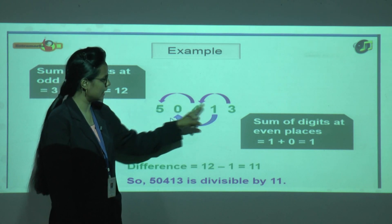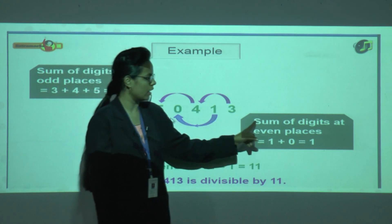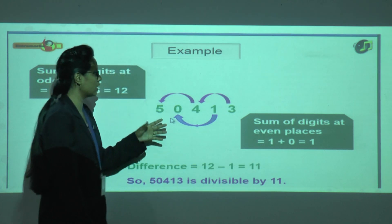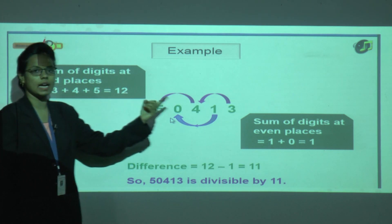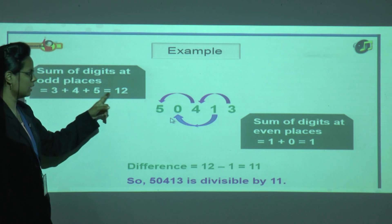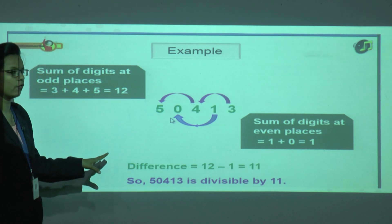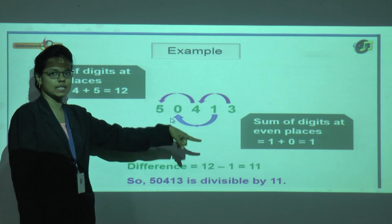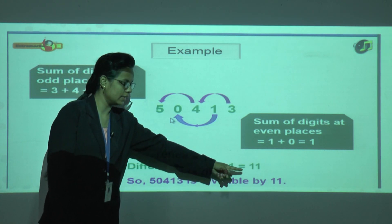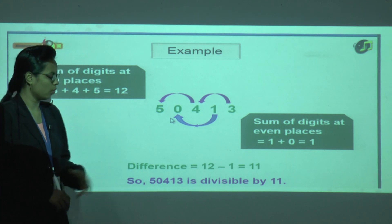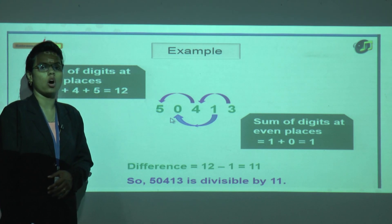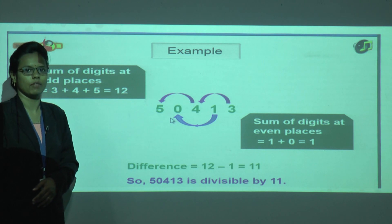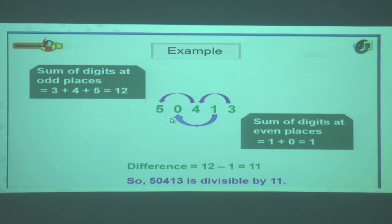Now we find the sum of digits at the even places: 0 plus 1 equals 1. Then we find the difference: 12 minus 1 equals 11. According to our rule, if the difference is 0 or a multiple of 11, the number is divisible by 11. Since 11 is a multiple of 11, the number is divisible by 11.